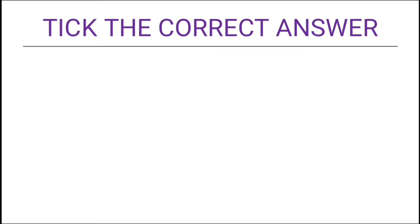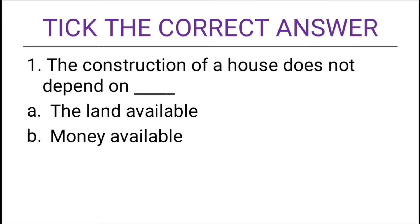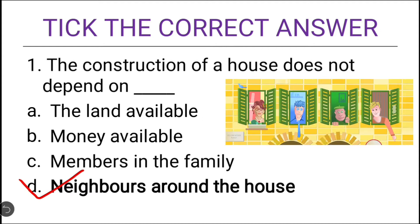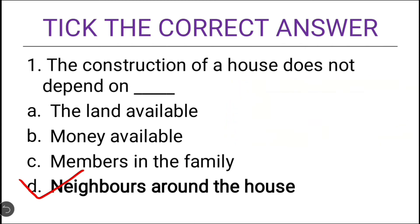Now let us solve some MCQs from the chapter. The first question is: the construction of a house does not depend on — options are the land available, money available, members in the family, and neighbors around the house. The correct answer is 'neighbors around the house', because construction of the house depends upon land available, money available, and how many members are there in the family, but it definitely does not depend upon the neighbors around the house.